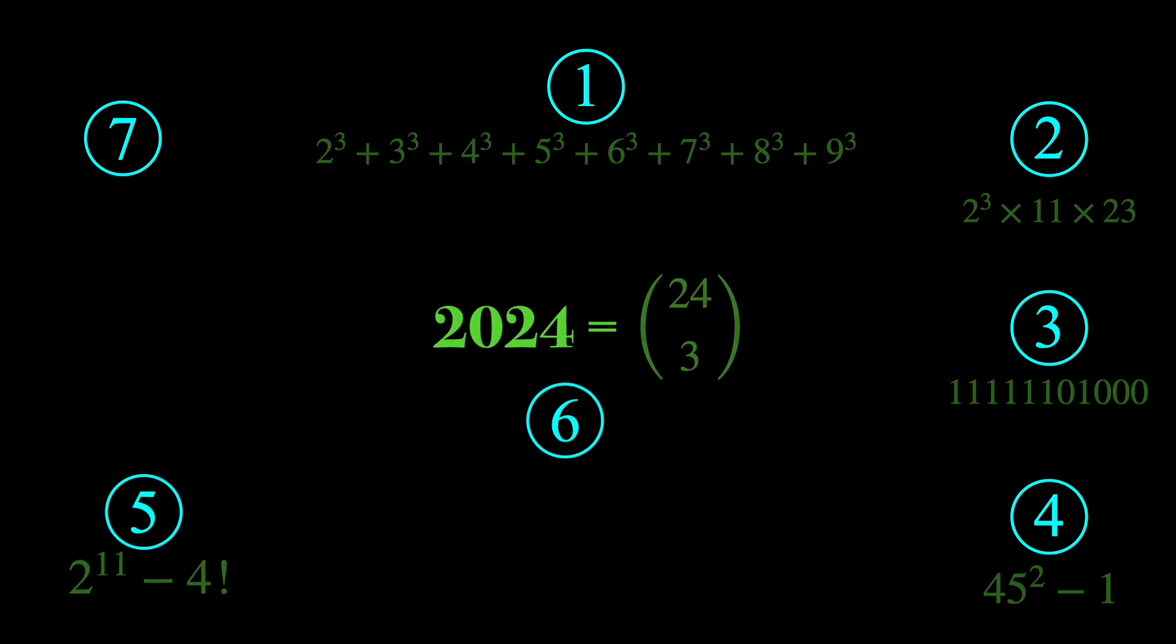Number six, 2024 is one of the binomial coefficients. It can be written as 24 choose 3.